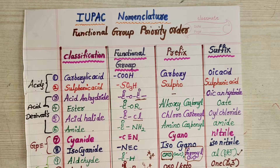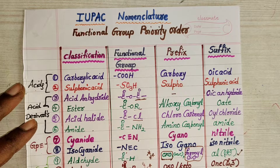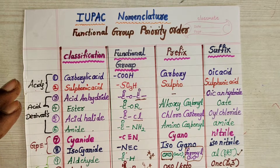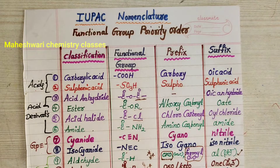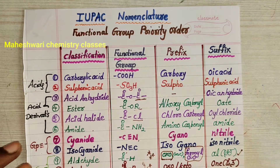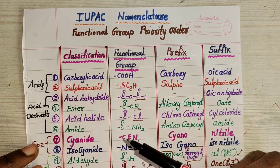Now see the trick. First learn the Functional Group Priority Order. After that I will explain the trick box.